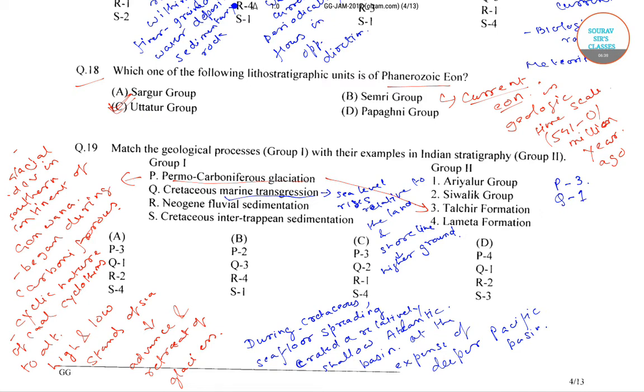Next is Neogene Fluvial Sedimentation. Fluvial is a process associated with rivers and streams and the deposits and land forms created by them. Neogene refers to the latter division of tertiary period. One of the examples of Neogene Fluvial Sedimentation is Sivalic Group. So next is R2.